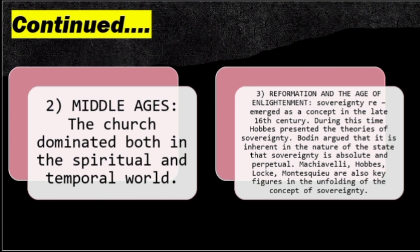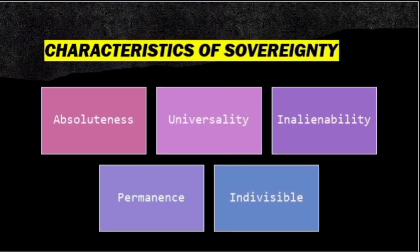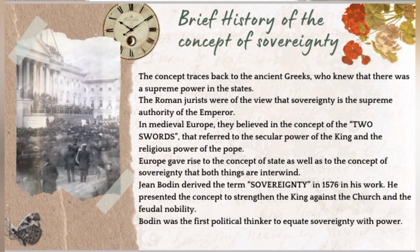Thomas Hobbes presented the theory of sovereignty in his Leviathan and signified the monarchical concept associated with absolutism, saying that the sovereign is unlimited and indivisible. He propagated absolutism in terms of sovereignty. Jean Bodin argued that it is inherent in the nature of the state that sovereignty is absolute and perpetual. Machiavelli, Hobbes, Locke, and Montesquieu are also key figures in unfolding the concept of sovereignty. The characteristics of sovereignty include absoluteness, universality, inalienability, permanence, and indivisibility.